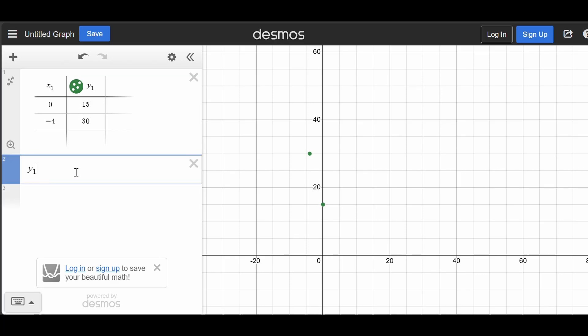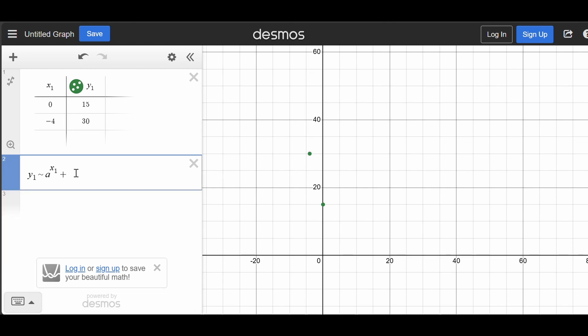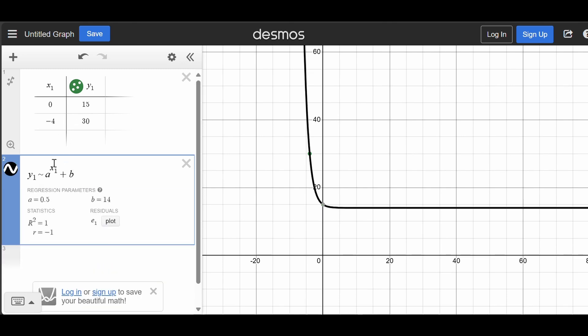So this regression here is going to be y1~a^x1 + b. And so the y1 here corresponds to the y1 in the table, the x1 corresponds to the x1 in the table.